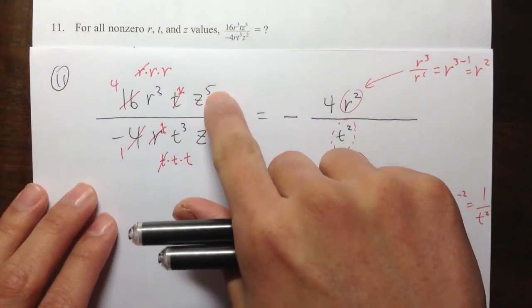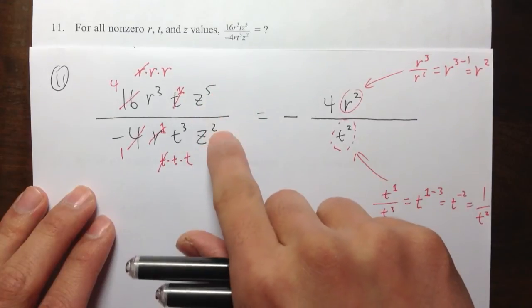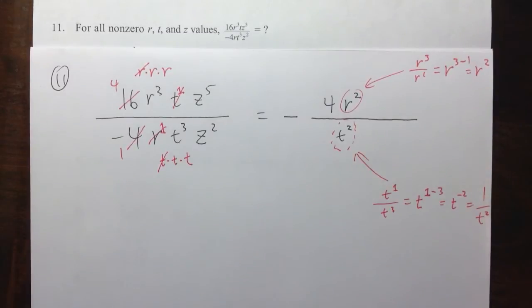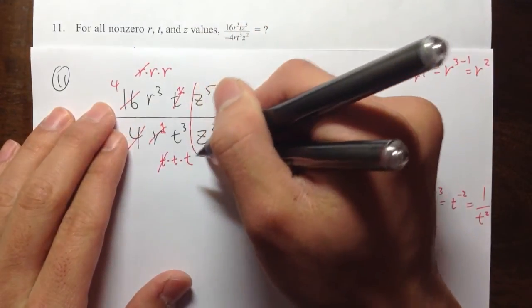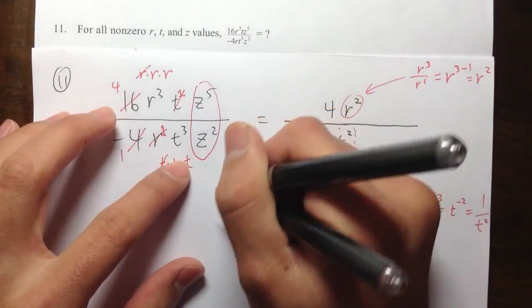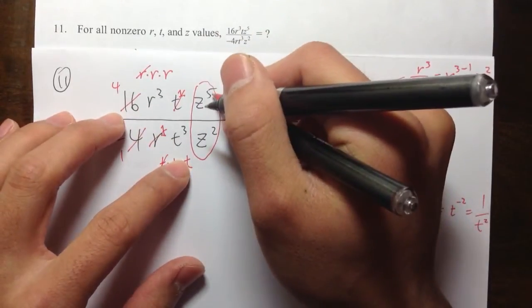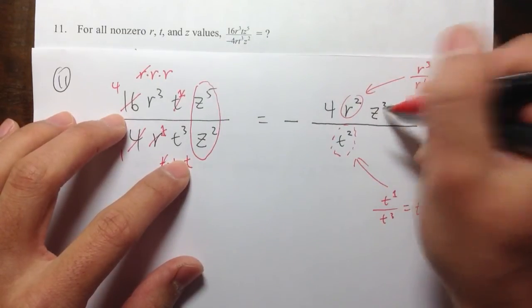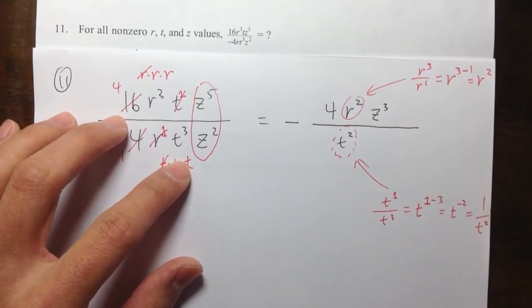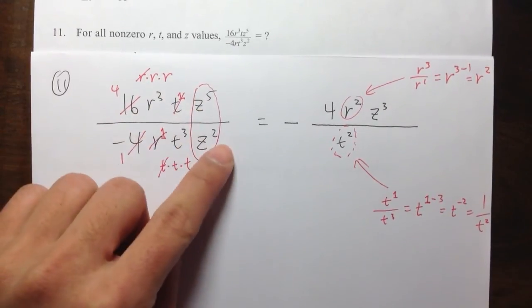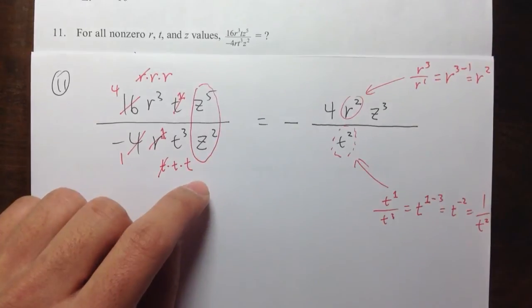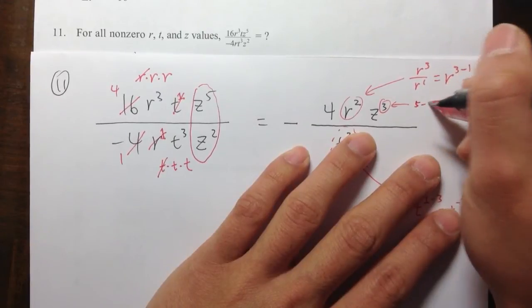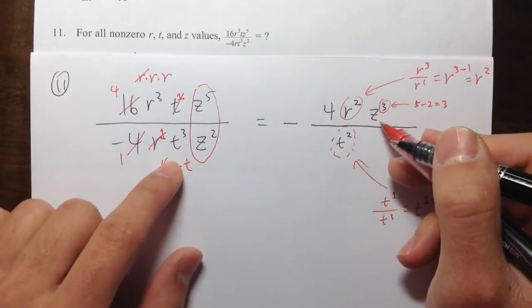So for the third one, for the z, I have z to the 5 over z to the second power. Let me do it with the exponent way, the rule of exponent way. So if you look at this together, z to the 5 over z to the second, I can just write this as z to the third power. And how did I get the third power? Because I just do 5 minus 2, which is a positive 3. This 3 is just 5 minus 2, which is equal to positive 3. So it stays on the top.